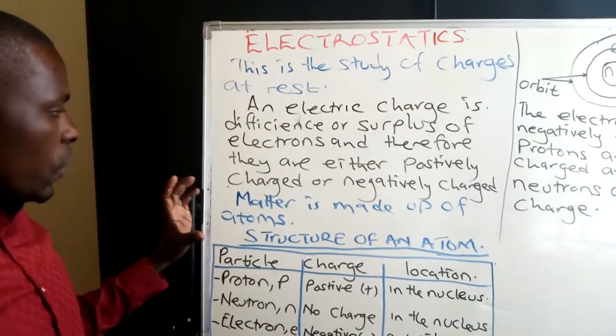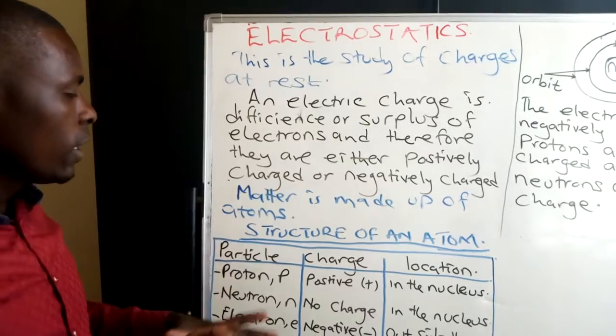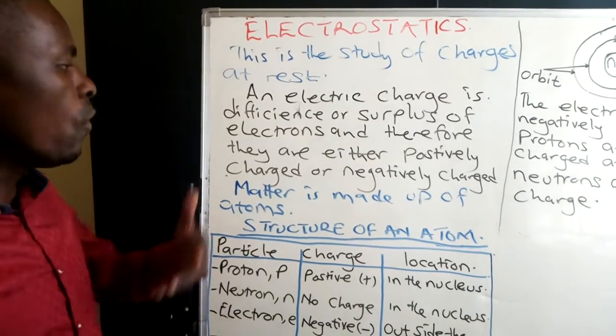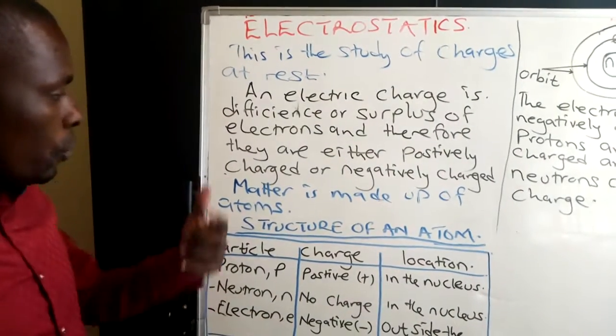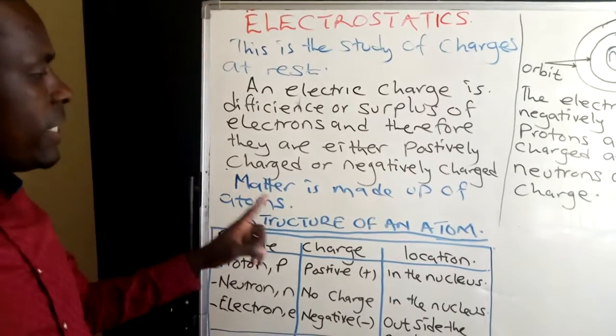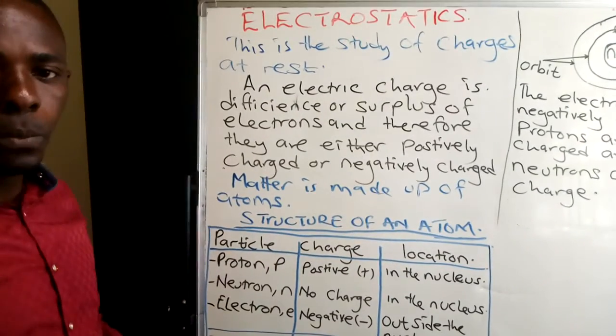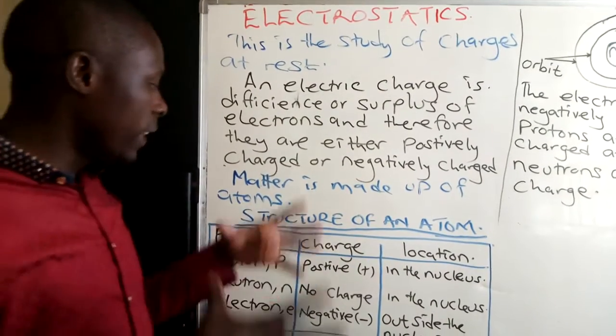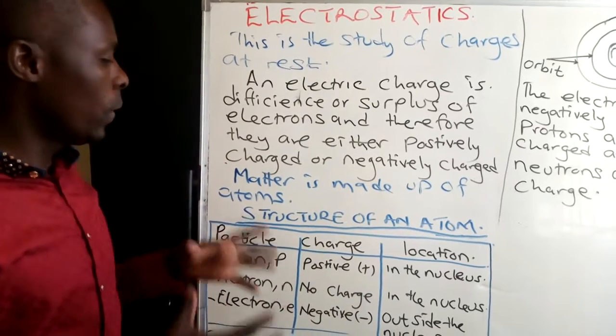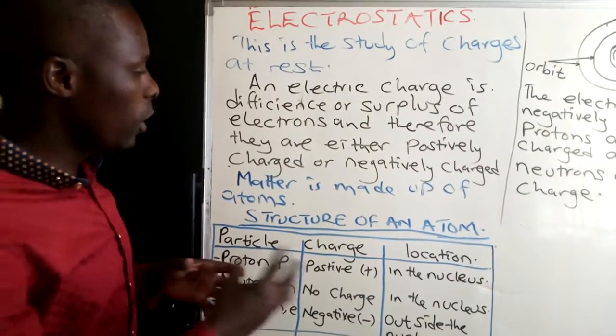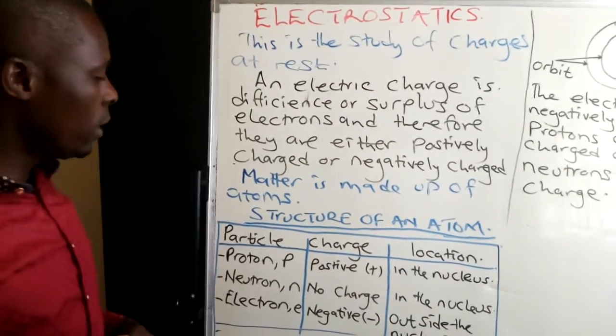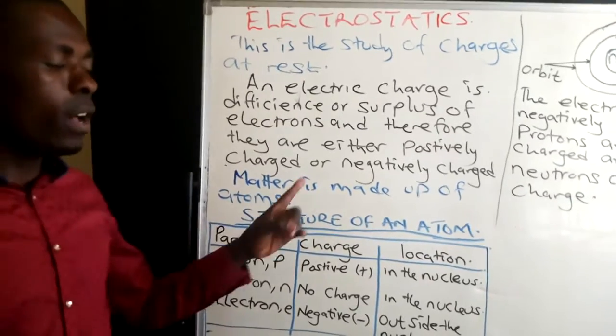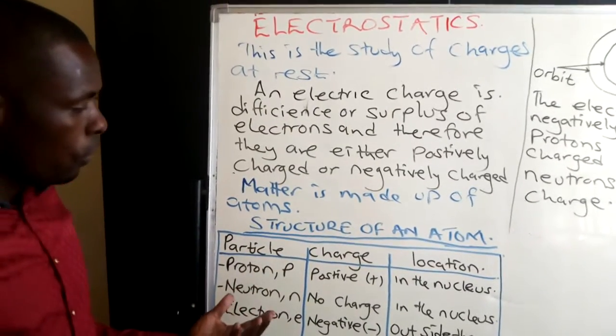When we're defining physics, we say that this is a study of matter in relation to energy. So matter is made up of atoms. Here we shall look at atoms. When we look at atoms, we shall know the idea of chemistry. Then we look at the structure of an atom. What is an atom made of?